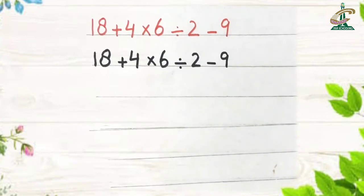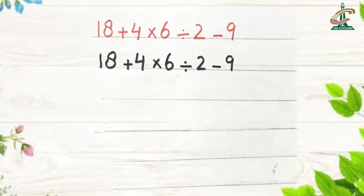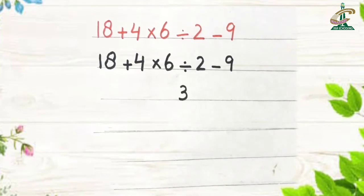According to the DMAS rule, first what will we do? Division. Now quickly tell me where is the division sign? Yes. Division is between the 6 and 2. When we will divide 6 by 2, the answer would be 3. Where will we write? Between these two. And write down remaining values as it is.